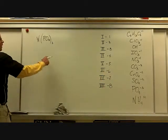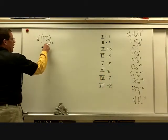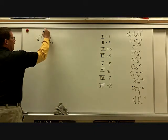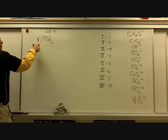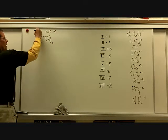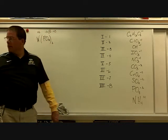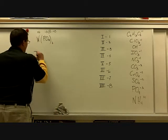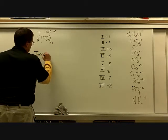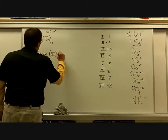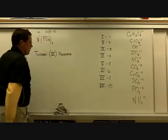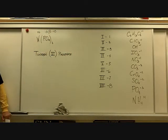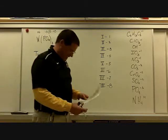For tungsten phosphate: phosphate has a negative-3 charge, and we have two of those, so the charge on tungsten must be plus-6. Checking the periodic table — yes, plus-6 is a possible charge for tungsten. So this is tungsten(VI) phosphate.